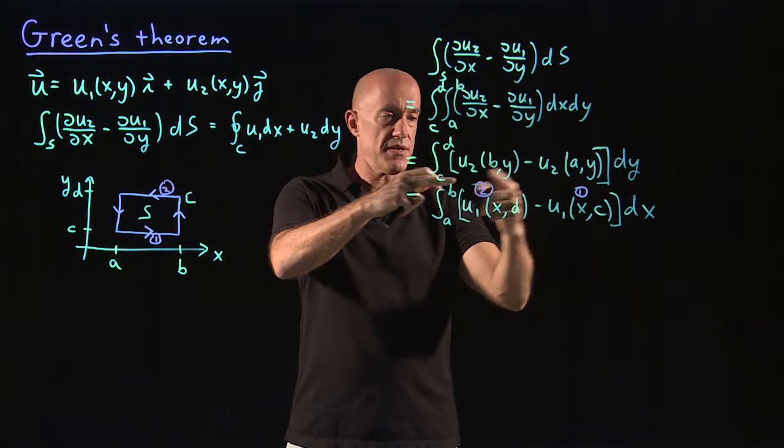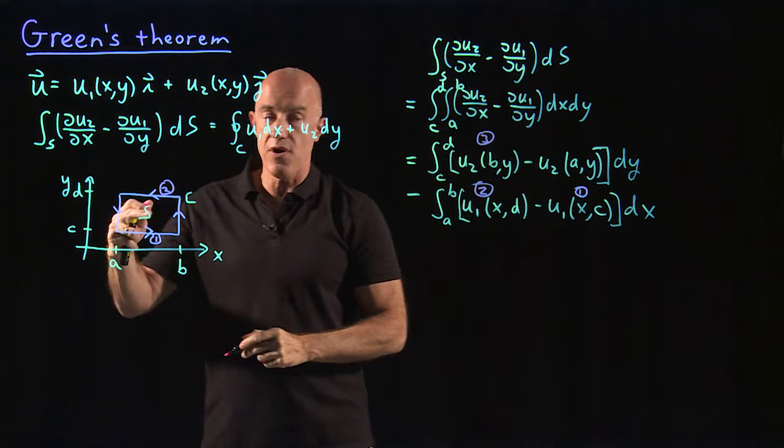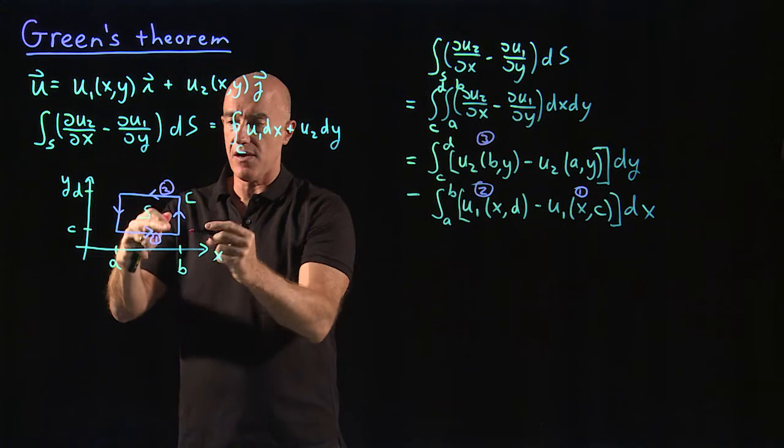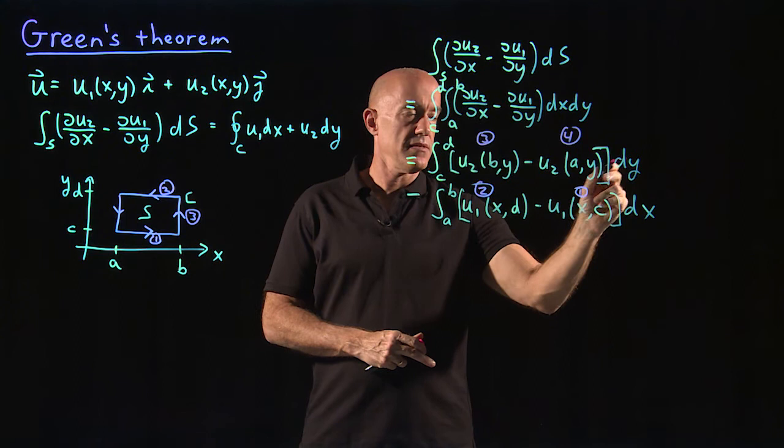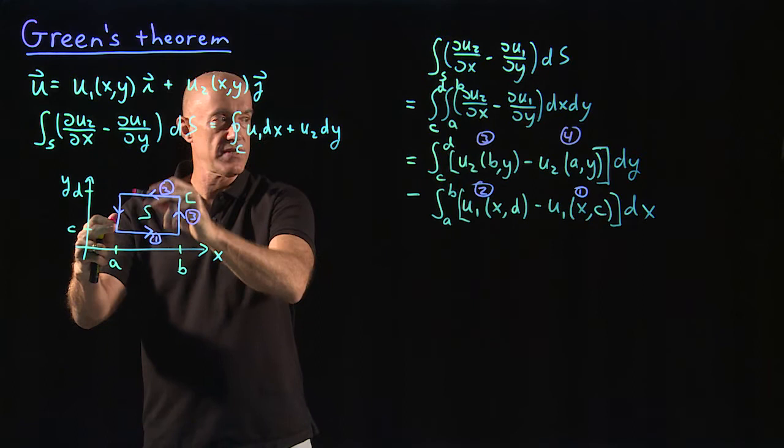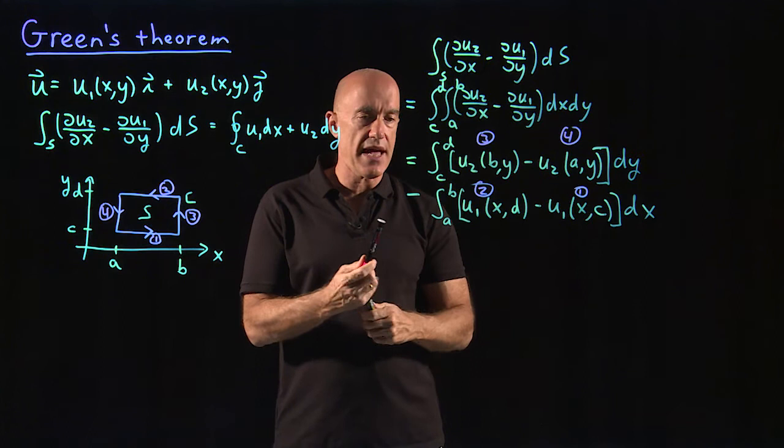Finally, in this first integral, we have a positive, the integral dy, u2 of by. Let me call that three. So we're at x equals b here and we're in the positive y direction, that's number three. And then finally, we have a negative sign, u2 of a, y, dy. We're here integrating dy, x equals a. This is in the negative y direction, so it gets a negative sign. So this is number four.